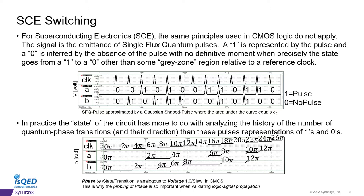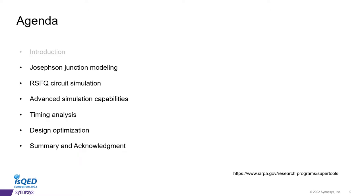Let's now bring the discussion back to superconducting electronics. For superconducting electronics, the same principles using CMOS logic do not apply. The signal is the emittance of single flux quantum pulses. A 1 is represented by the pulse, and a 0 is inferred by the absence of the pulse, with no real definitive moment when precisely that state goes from a logic 1 to a logic 0 other than some gray zone relative to a reference clock. In practice, the state of the circuit has more to do with analyzing the history of the number of quantum phase transitions and the direction than these pulses and the representations of 1's and 0's. This is why the probing of phase is so important when validating logic signal propagation for these circuits.